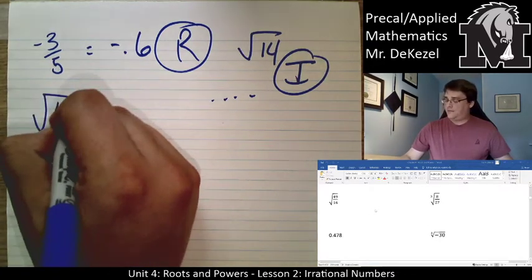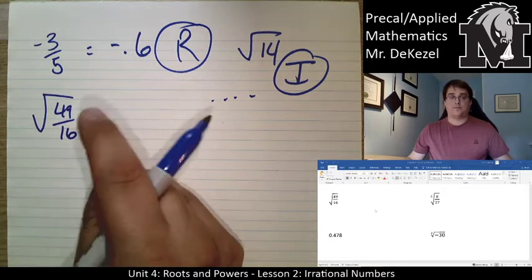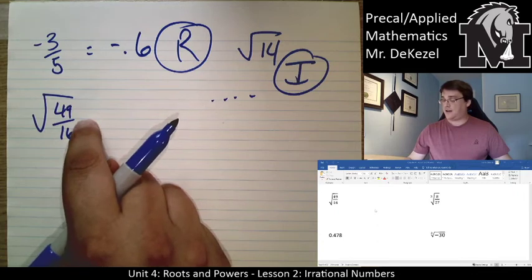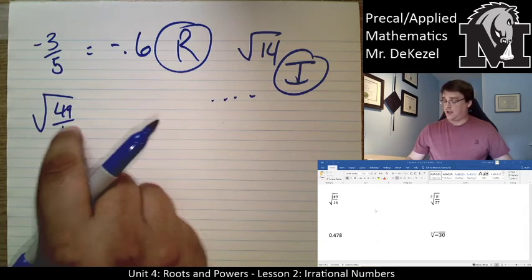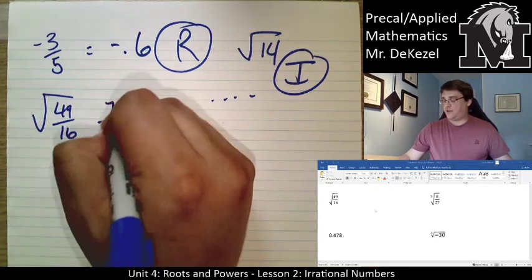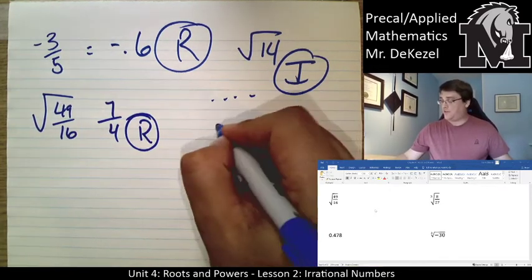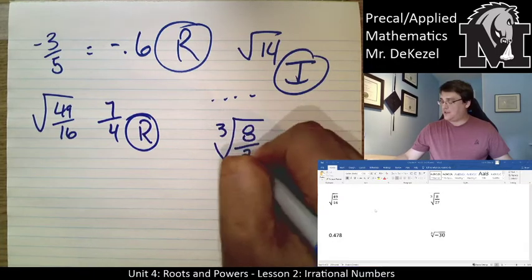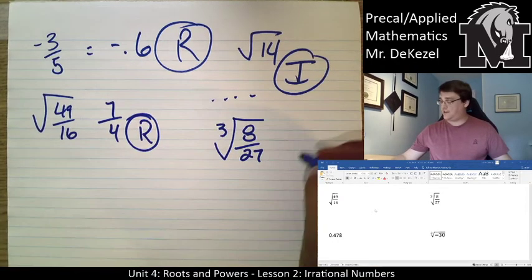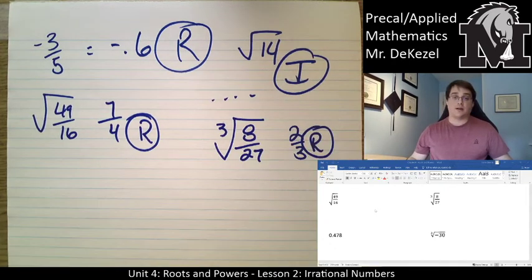The square root of 49 over 16 — we can represent that as a fraction by taking the square root of 49 and the square root of 16, which gives us 7 over 4. That is a rational number. The cube root of 8 over 27 — the cube root of 8 is 2 and the cube root of 27 is 3, so that gives us 2 over 3, making it a rational number.